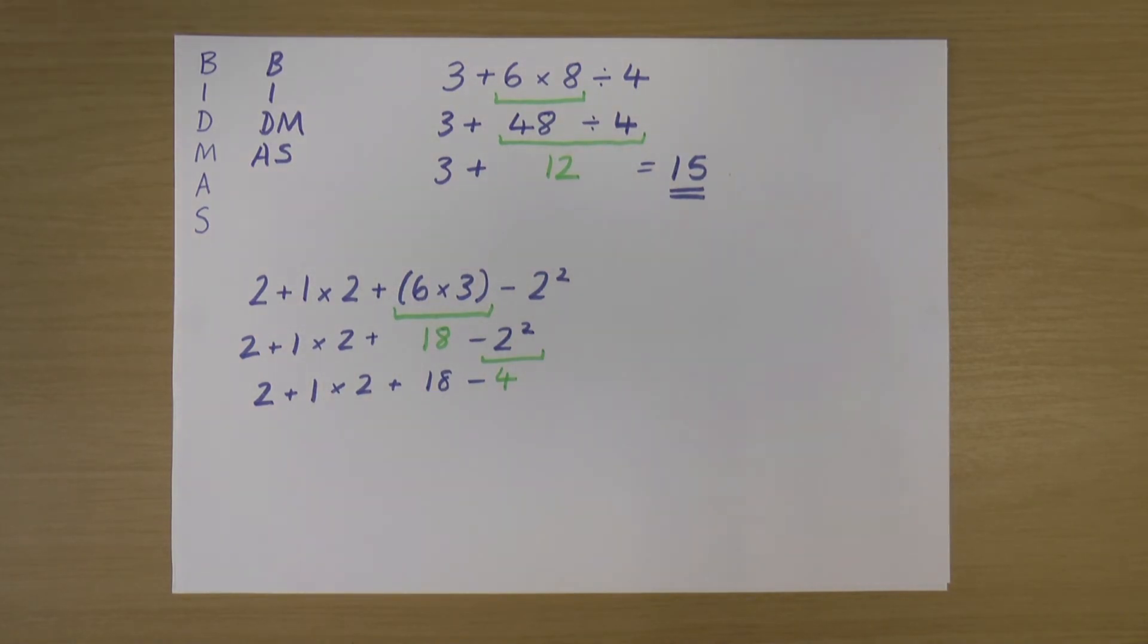There we go. Okay, so starting at the top again with BIDMAS, brackets, indices—no, I don't have any of those. Do I have any divisions or multiplications? Yes, I do. I have a multiplication here. So I'm going to do that multiplication. 1 × 2 is 2. And then rewrite the sum.